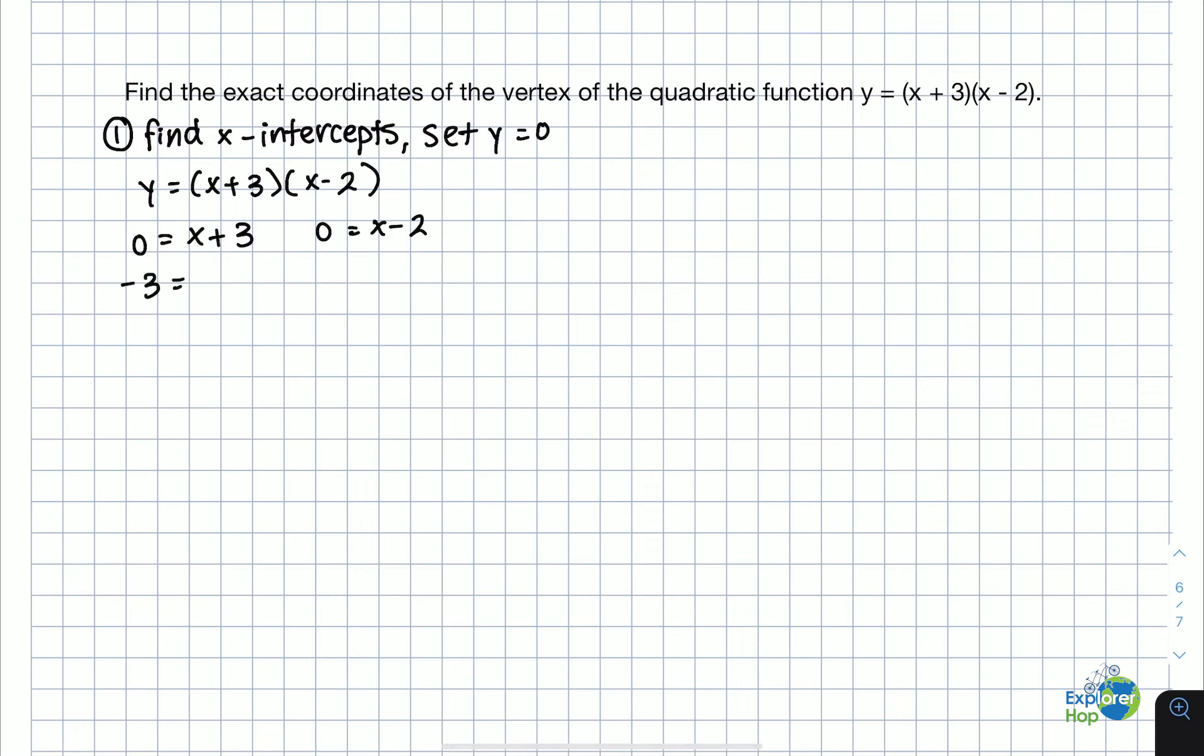Therefore, the two intercepts are negative 3 equals x, and 2 equals x. So these are our two intercepts.